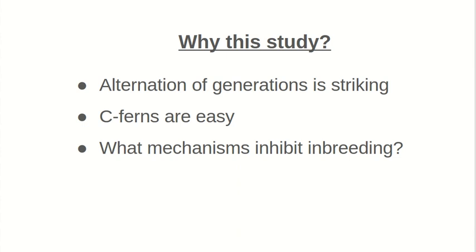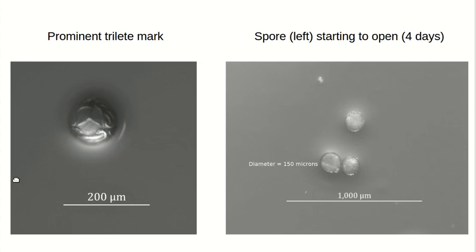I'm going to begin with some visuals of the early development of sea ferns. Here you have a spore, and you'll notice what we call a trilete mark. This is an artifact of the early development of spores. A single cell divides twice to create four cells and they form themselves into a pyramid. The trilete mark is the scar that's left behind when that pyramid separates into the four spores. A few days after sowing, you can see this spore opening along three seams defined by its former trilete mark.